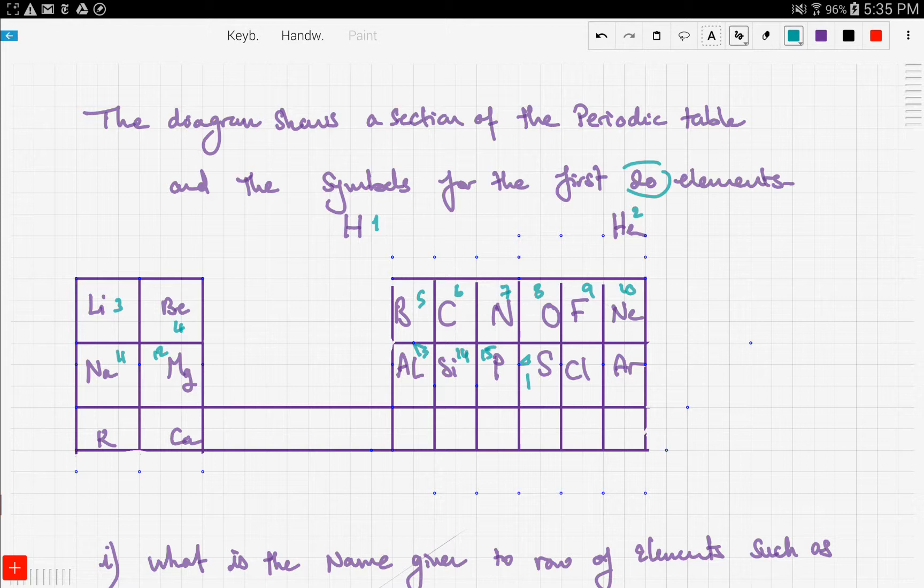20 elements. We said before in previous videos on electronic configuration and the periodic table that atomic number is the number of electrons that the element has.